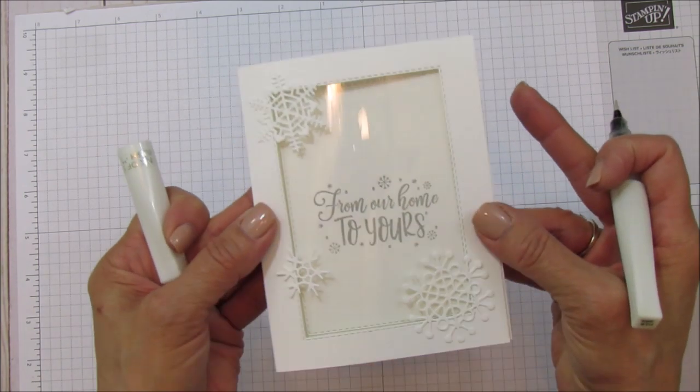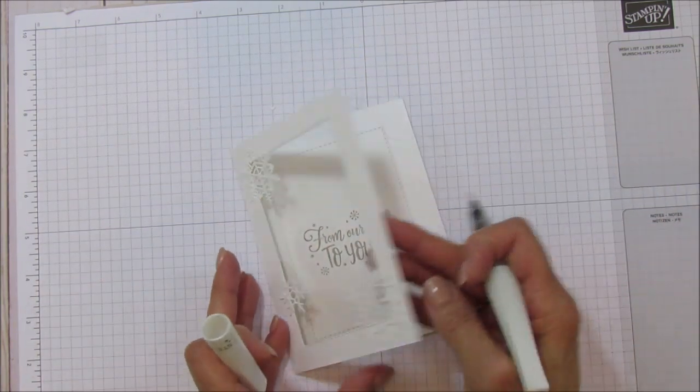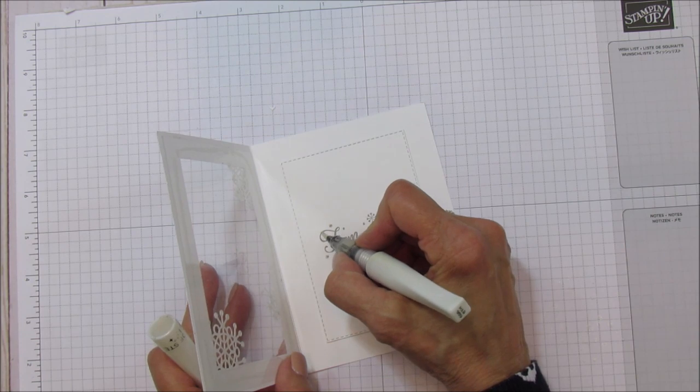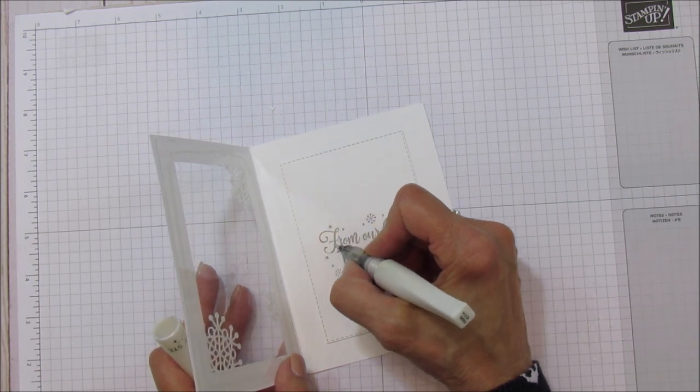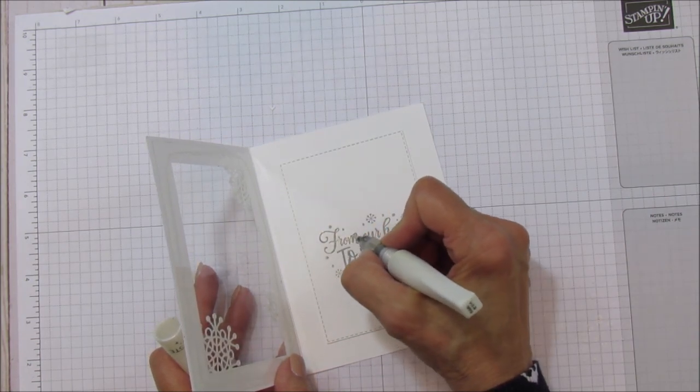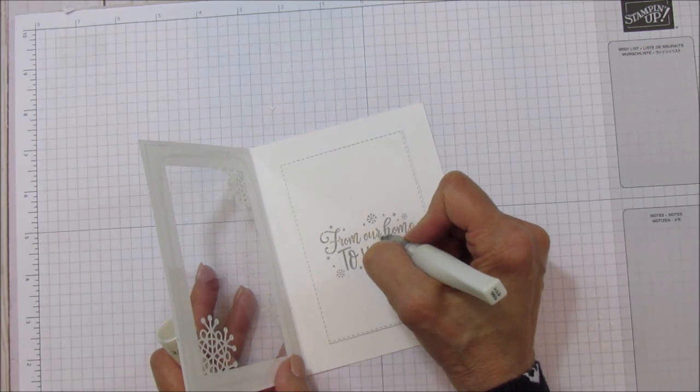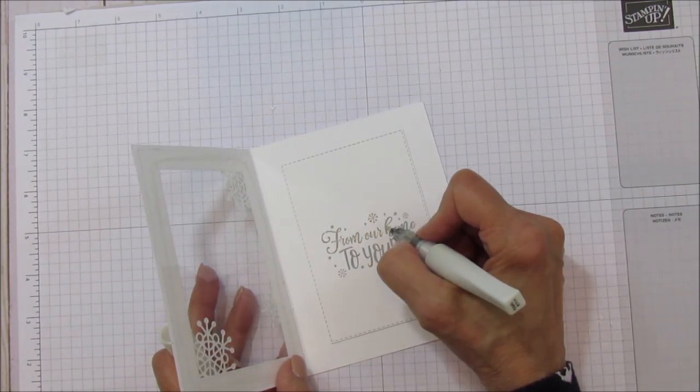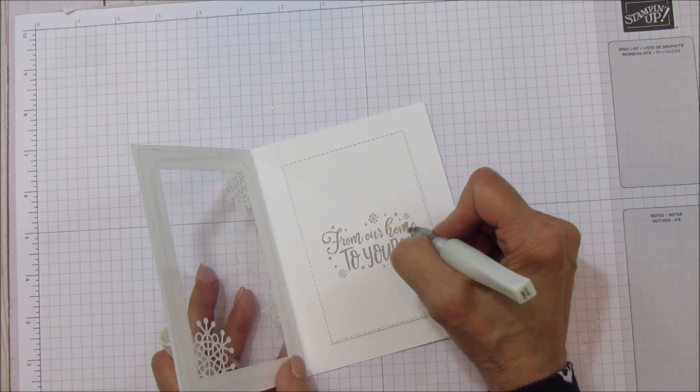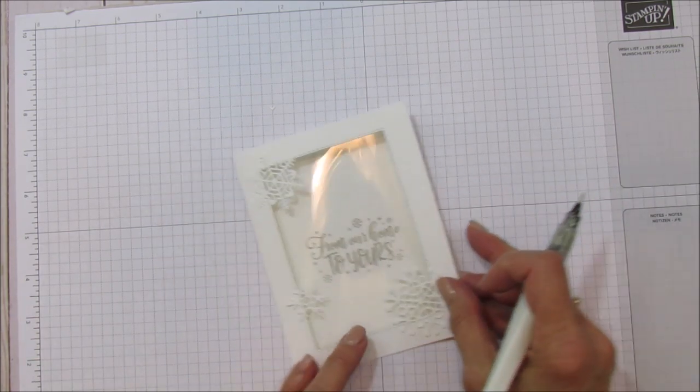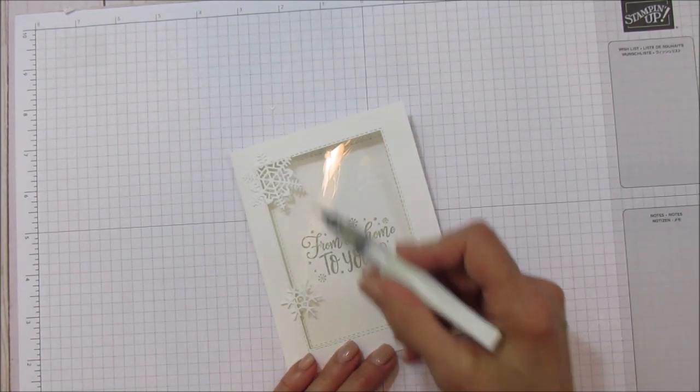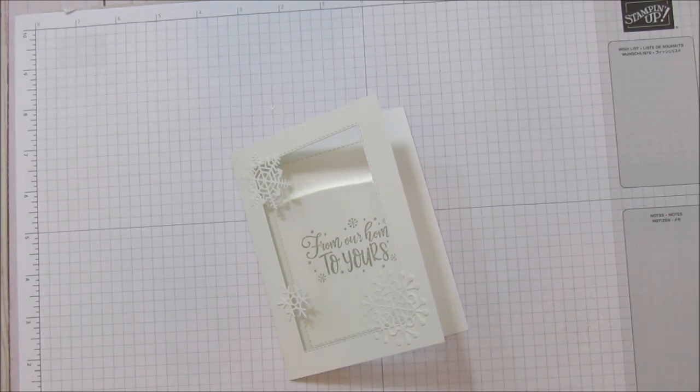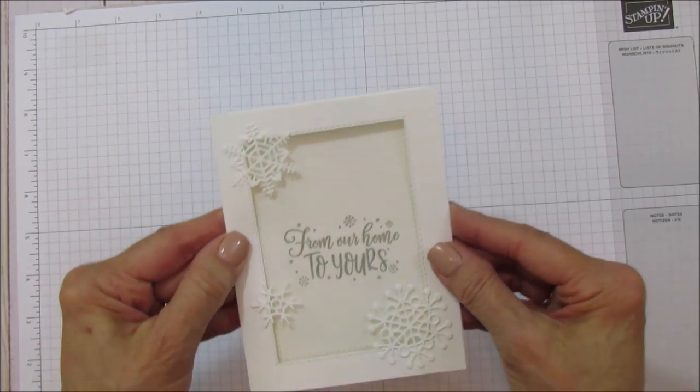Now what I did next is I took my wink of Stella and it really did add to it. You could leave it just like this and you could be done with it but I just wanted to add a little wink of Stella. So I went over all the letters with the wink of Stella and the snowflakes.